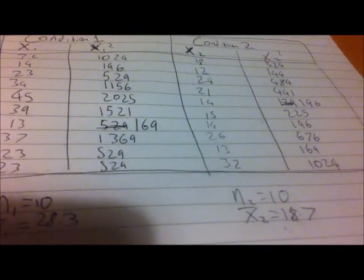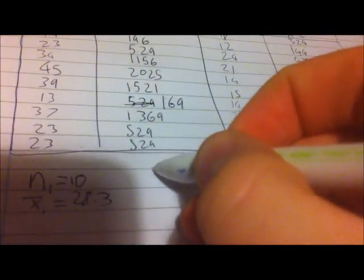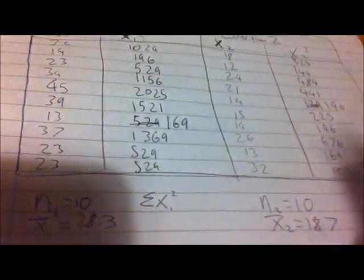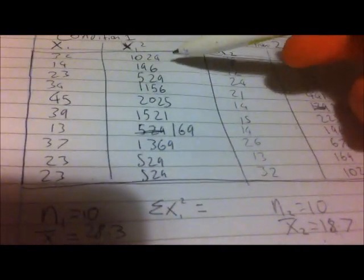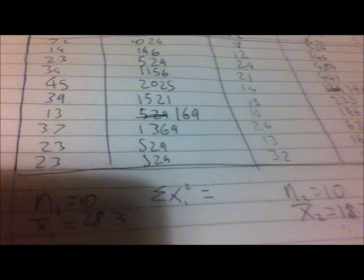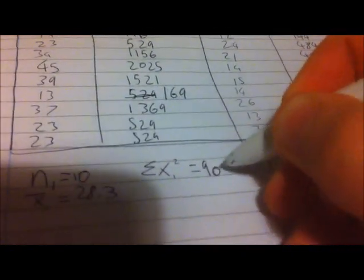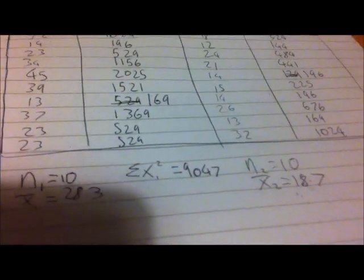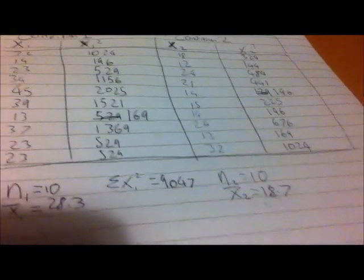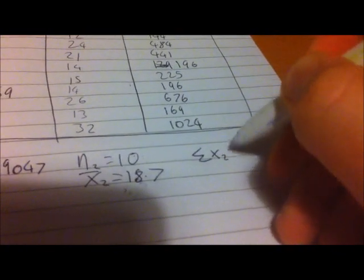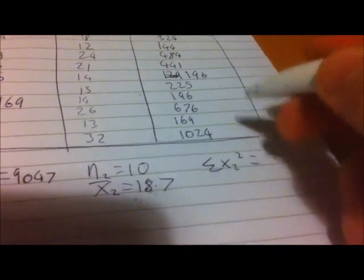So then you've got your sum - you've got all of these values squared and all these values squared. Then what you have to work out is this little beautiful figure here. It's a sigma, means sum of - sum of your values x1 squared. So if you add all these up, you get 9047. And then if you work out the sum of all these, which will be sigma x2 squared, that equals 3879.